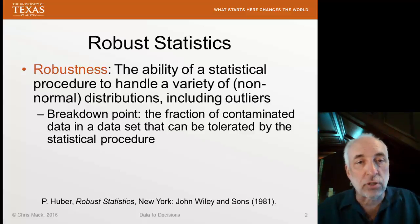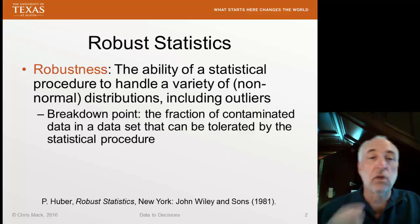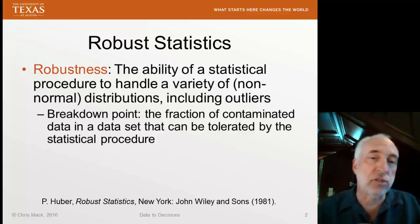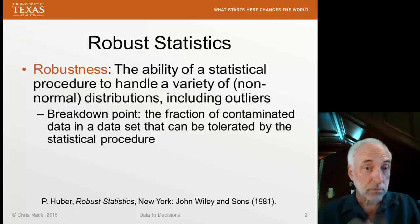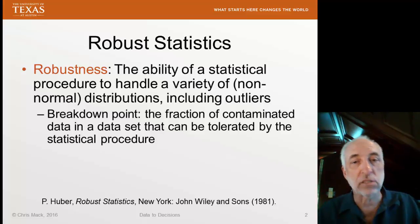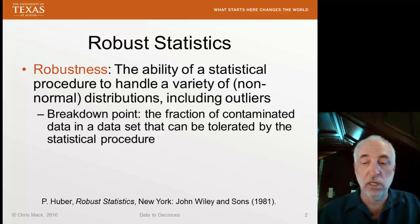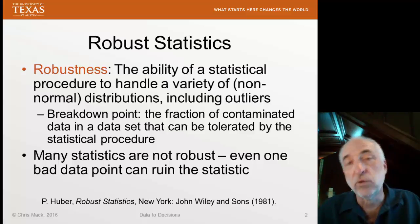One of the ways we measure robustness is something called the breakdown point. Suppose I have a data set and I replaced one of the data points with a weird, extreme value — something orders of magnitude off from the distribution the rest of the data exhibits. How many of these bad, contaminated data points can you tolerate and still get a reasonable result? We call this the breakdown point. Many of the statistics we use are not robust at all — even one bad data point can ruin that statistic.